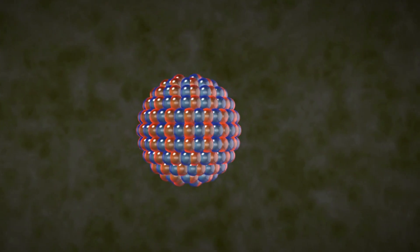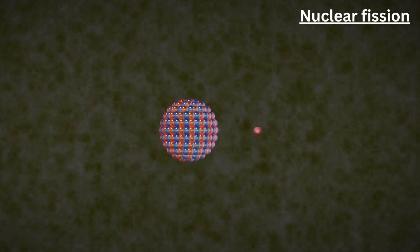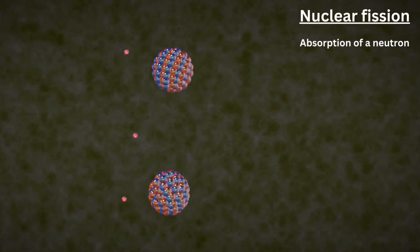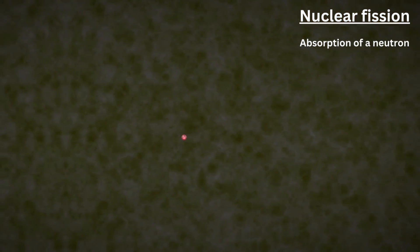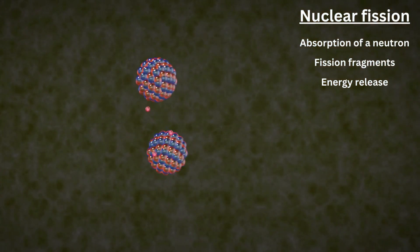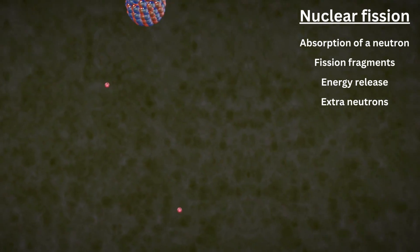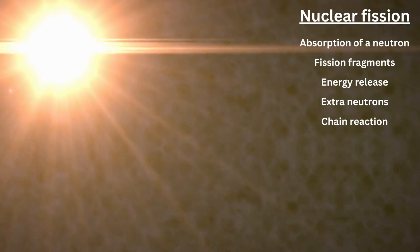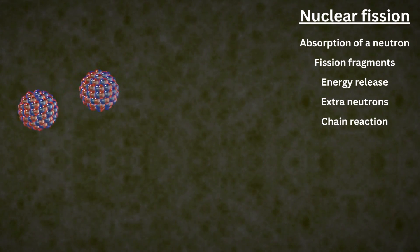In general, the nuclear fission process entails the absorption of a neutron by a heavy atom, the subsequent splitting of the nucleus into smaller fragments, the release of energy and extra neutrons, and the possibility of a self-sustaining chain reaction provided the conditions are managed properly.